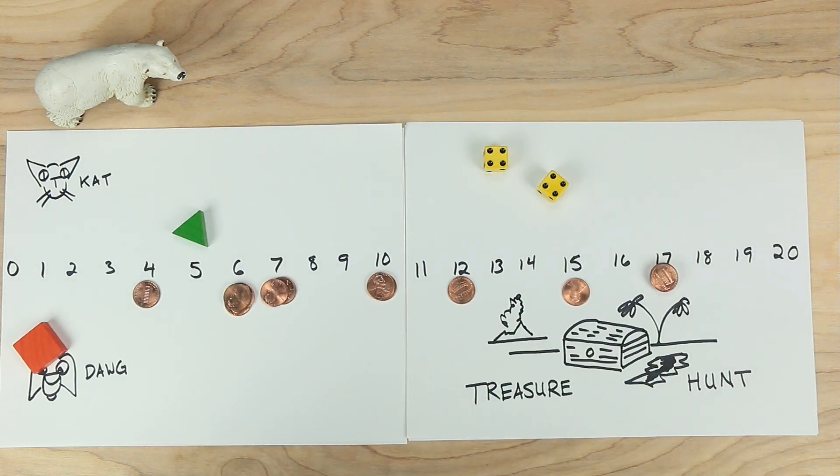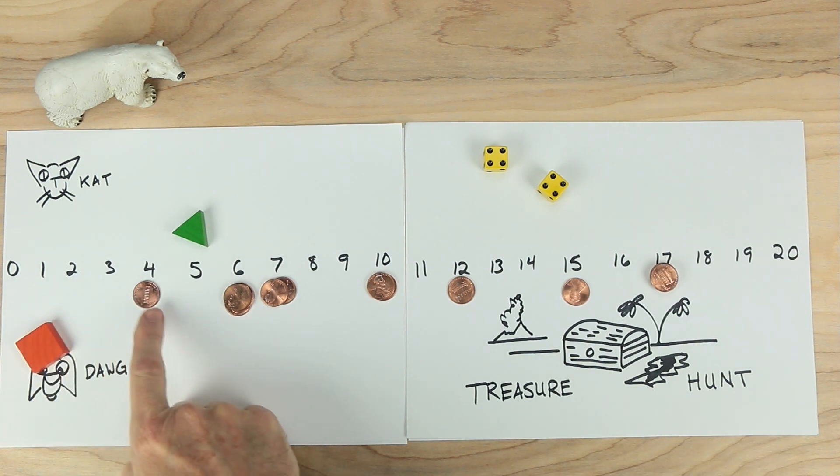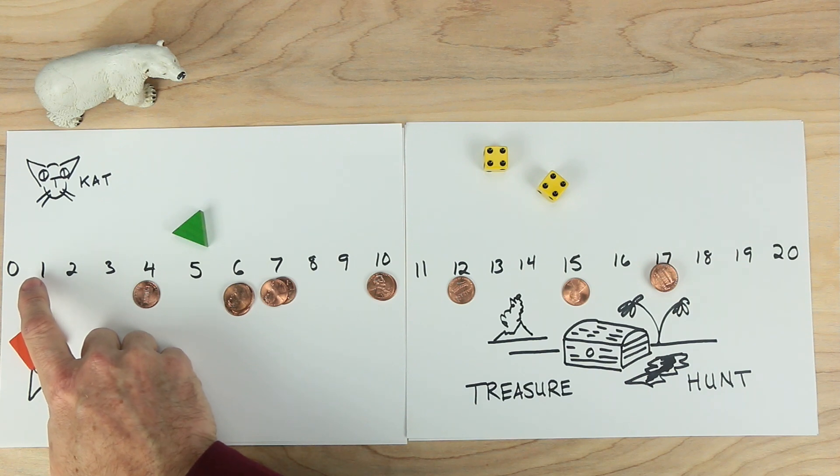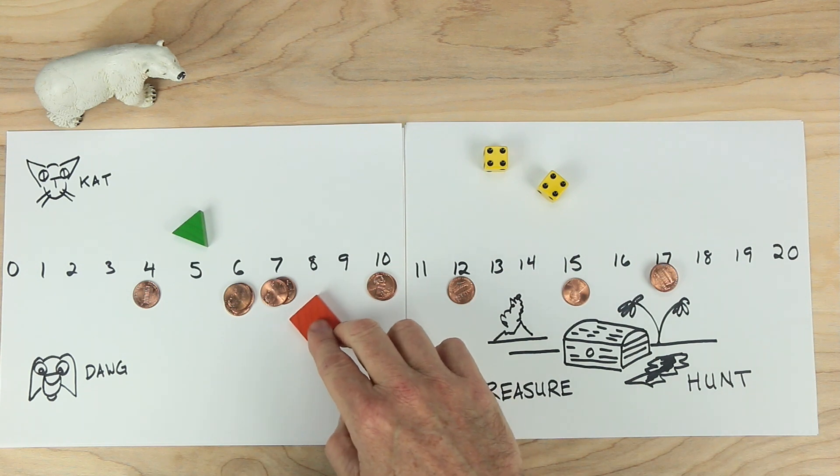It's dog's turn. Dog rolls two fours. Dog could choose to go one, two, three, four, and then back four, and end up at zero again. But dog decides to go four forward and four more. One, two, three, four. One, two, three, four. Dog is now at the eight. There's no treasure there.